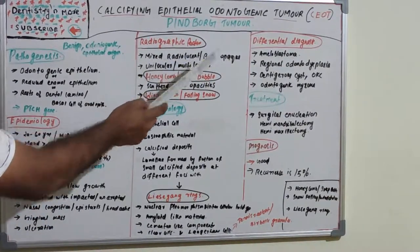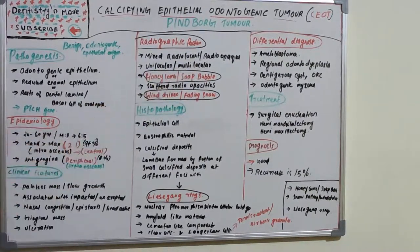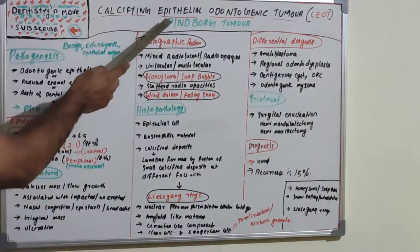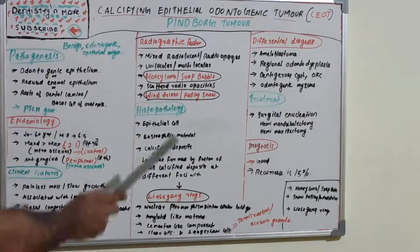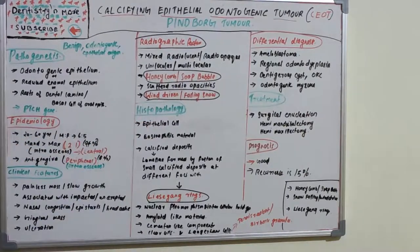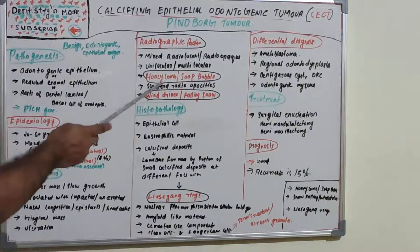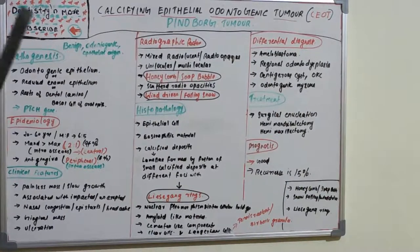Regarding radiographic features, CEOT shows mixed radiolucent and radiopaque areas and can be unilocular or multilocular. The most striking feature is a honeycomb or soap bubble appearance due to scattered radiopacities. It can also show a wind-driven or snow-falling type appearance. Never forget these features — honeycomb, soap bubble, snow-falling, or wind-driven appearance — as they are key radiographic findings.